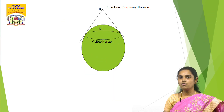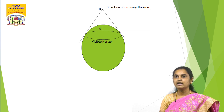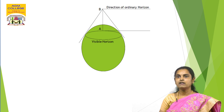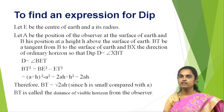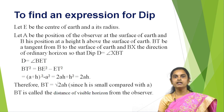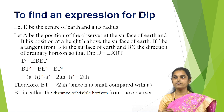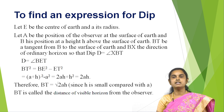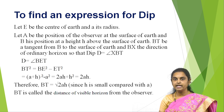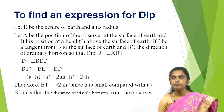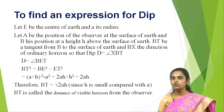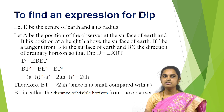This diagram explains the dip of horizon. Imagine an observer at position A with point B — from A, the tangent line gives the visible horizon, and from B it is the direction of the ordinary horizon. The dip D equals angle XBT, and D equals angle BT. From Pythagoras, BT² = OB² − OT², giving (A+H)² − A², which simplifies to 2AH. Therefore BT = √(2AH), where H is small compared to A. BT is the distance of the visible horizon from the observer.